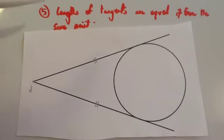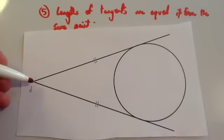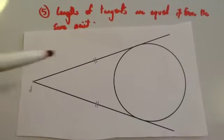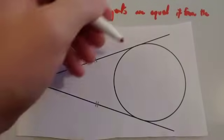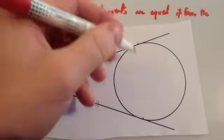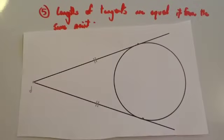The fifth circle theorem is that the lengths of the tangent are equal if they're from the same point. So if you were to choose a random point outside of the circle and draw the tangents to the circle, there will always be two tangents from any particular point, then the length from here to here and from here to here where the line touches the circle, those lengths will be exactly the same.